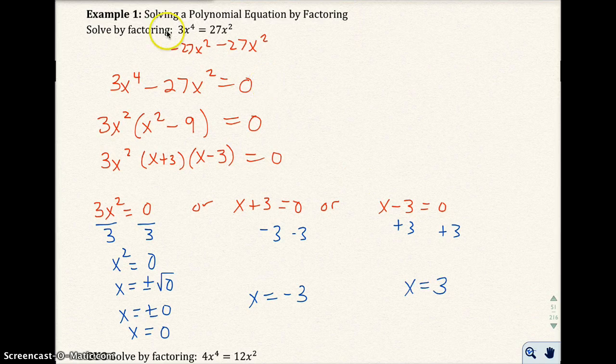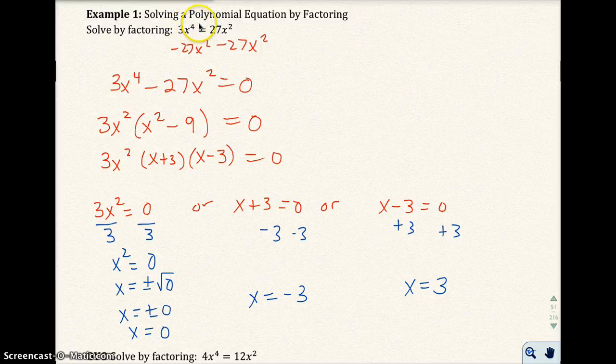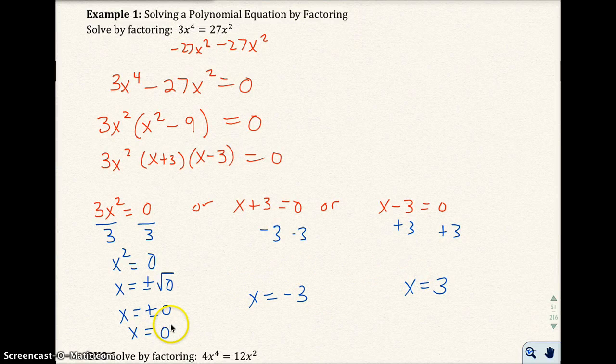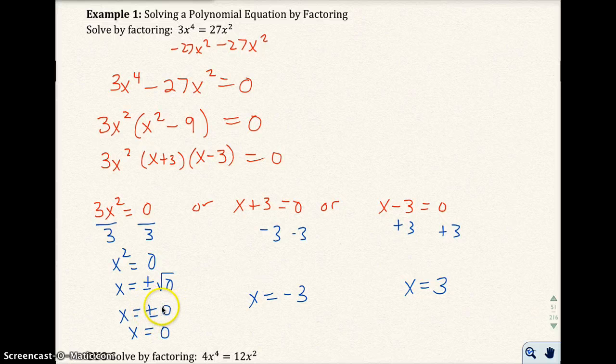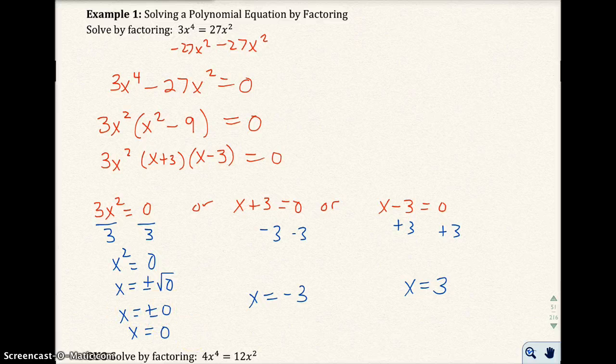You'll notice that I had a fourth degree equation here, and normally when you have a fourth degree equation, you expect four solutions. Technically there are four solutions - the plus or minus zero - but because plus or minus zero is still zero, that just counts as one. But if this had been plus or minus 2 or plus or minus 4, that would have been two solutions there. We've got three solutions, but technically there are four.